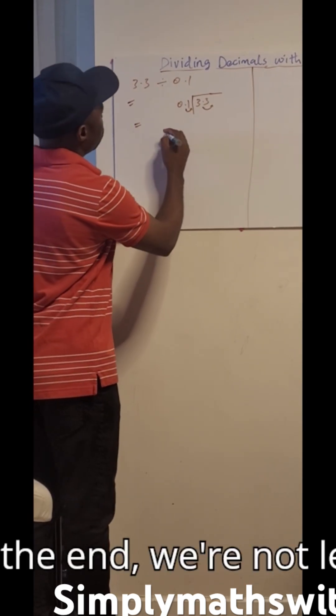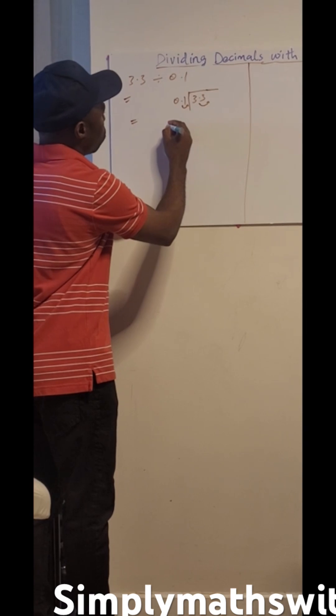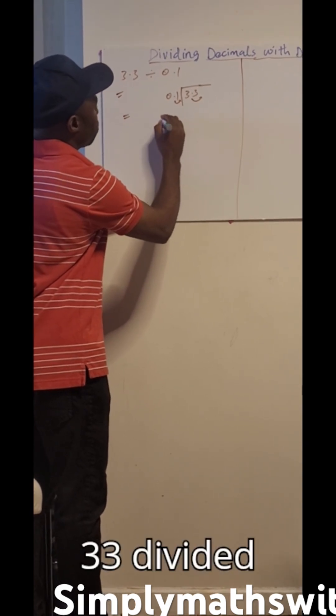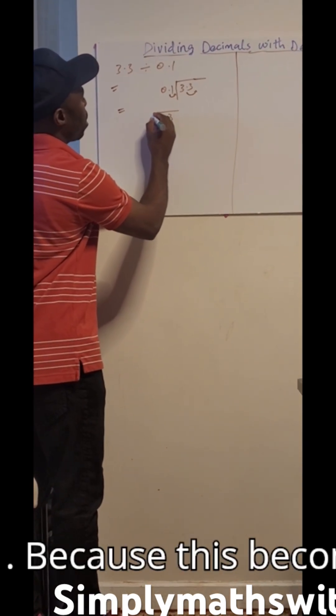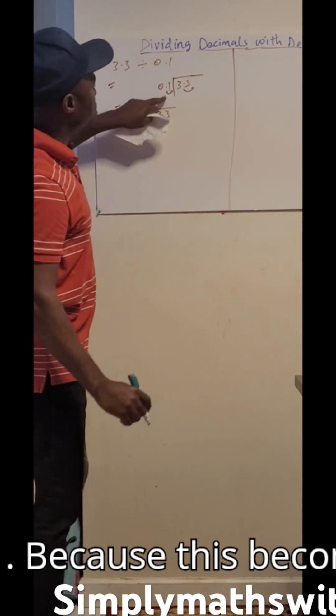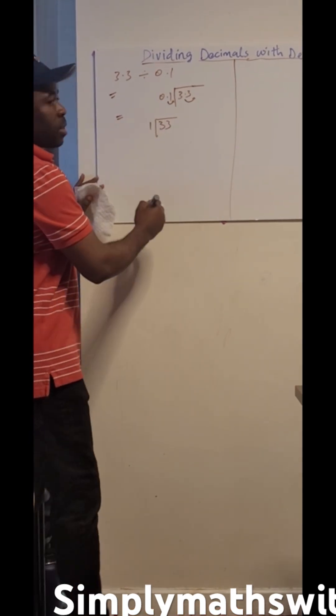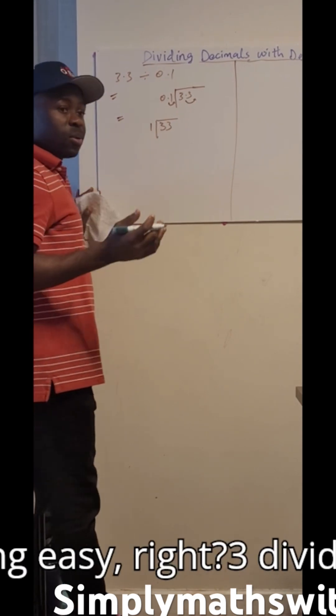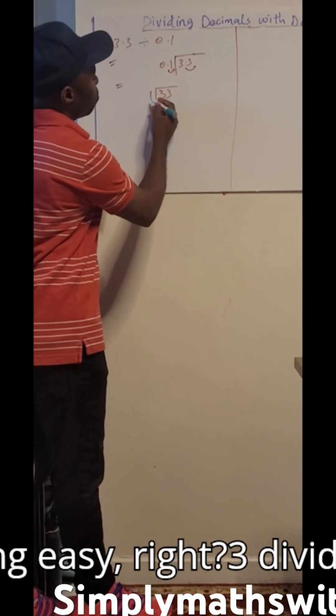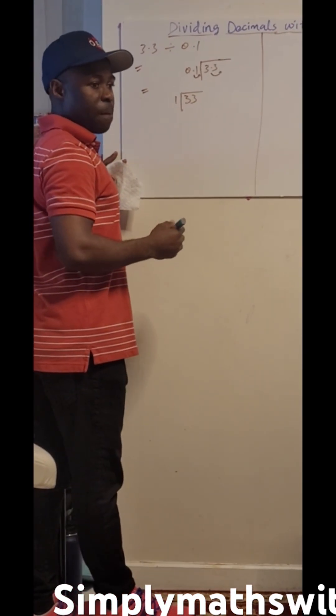And at the end, we are now left with 33 divided by 1. Because this becomes 1. This becomes 33. Now, let's do that. I know it's not looking easy, right? 3 divided by 1 is what?